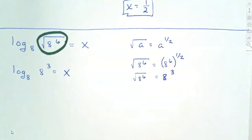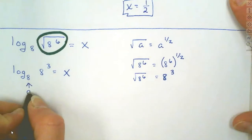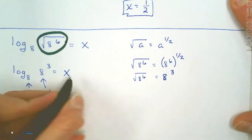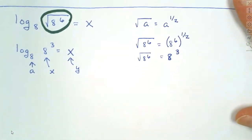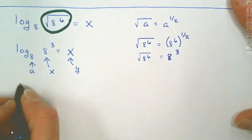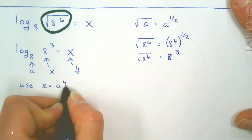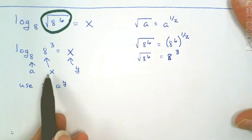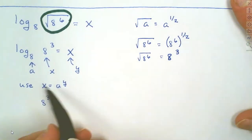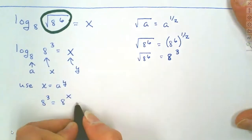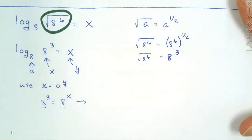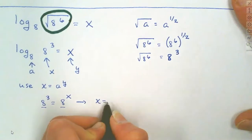We've gotten rid of our root — just like question 39 on your practice final, just different numbers. Now we know the base is a, so our 8 is a. This entire simplified part is your x, and the number on the end is the y. We transform it into an exponential using x equals a to the y power. We know our x is 8 to the 3rd and our a is 8, and our y is x. Since the bases are the same, x must equal 3.